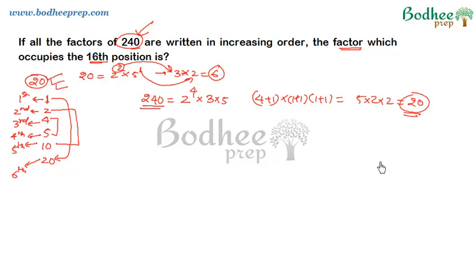Definitely, if I want to list all those factors in increasing order, the number 1 will occupy the first position, number 2 will occupy the second, 3 is also the factor which will occupy the third position, so and so forth. And the last factor will be 240. So this will occupy the 20th position, and this will occupy the first position. And we know that the product of these two will give me the number 240 itself.